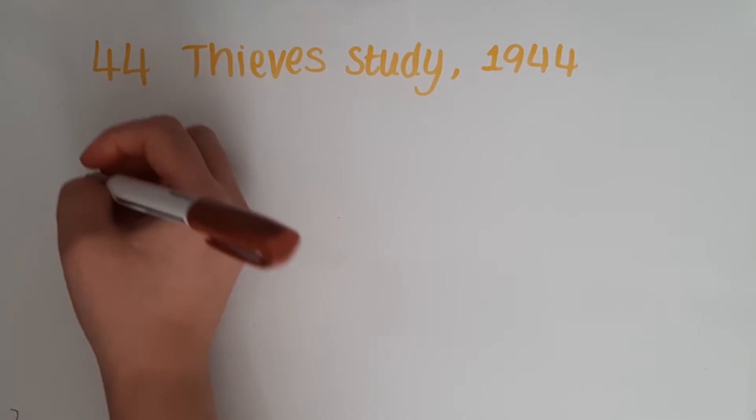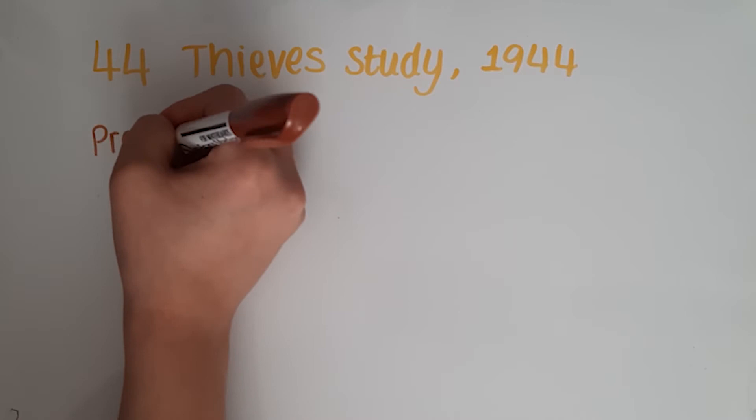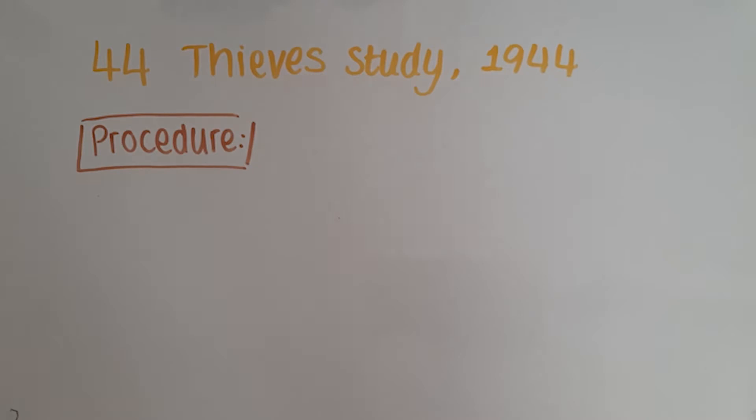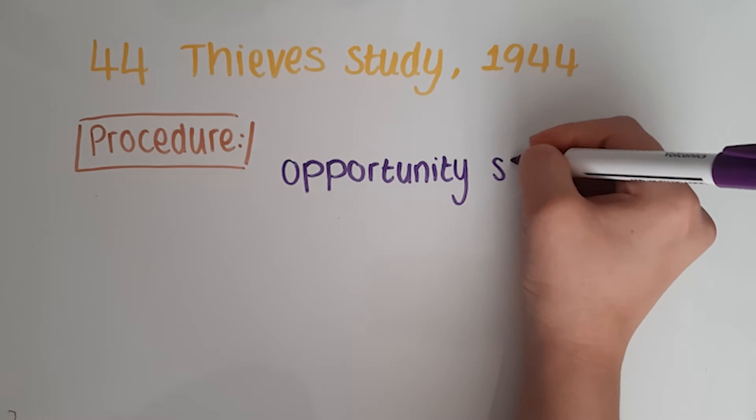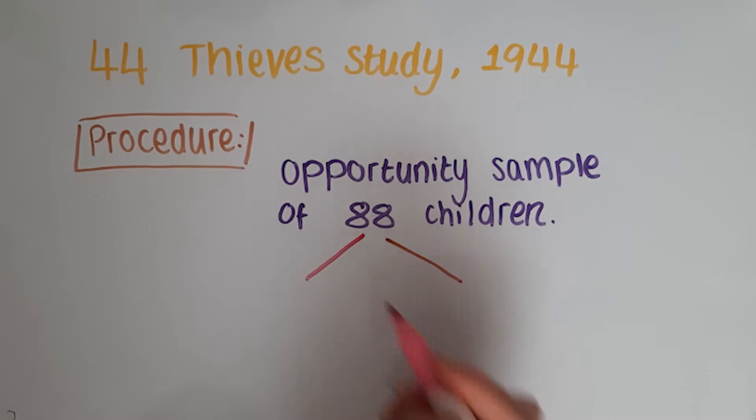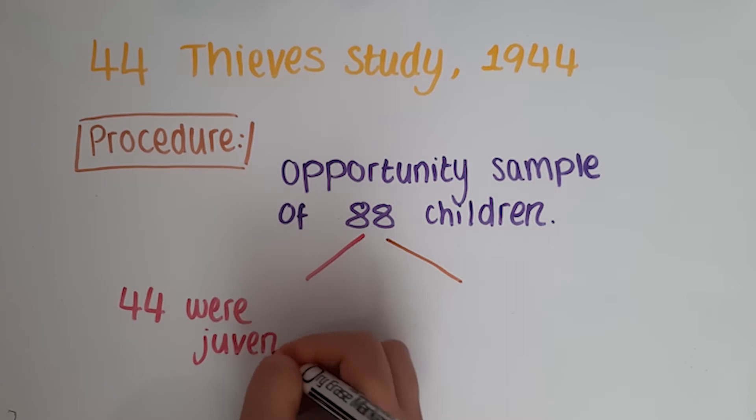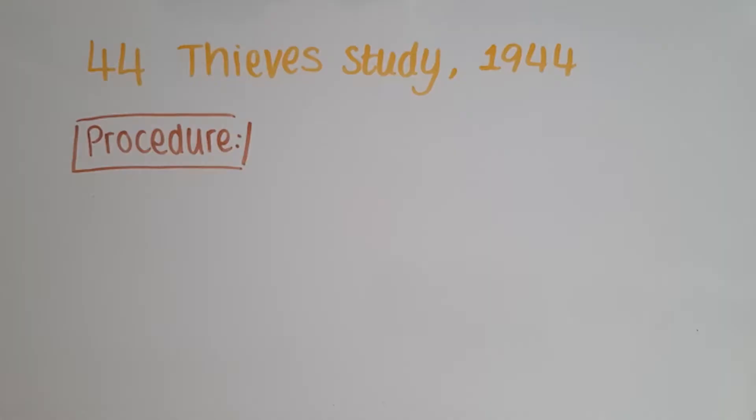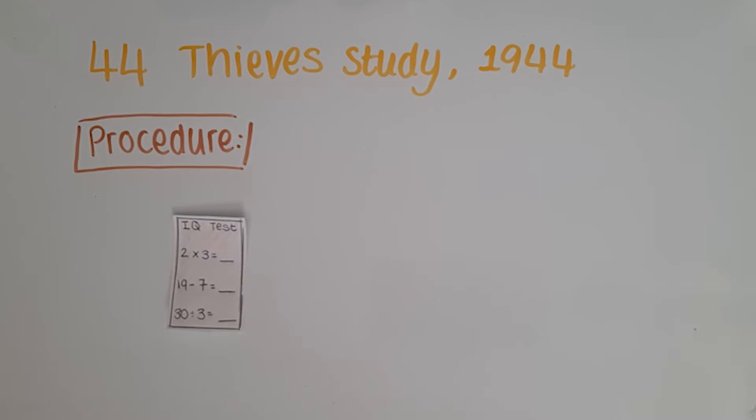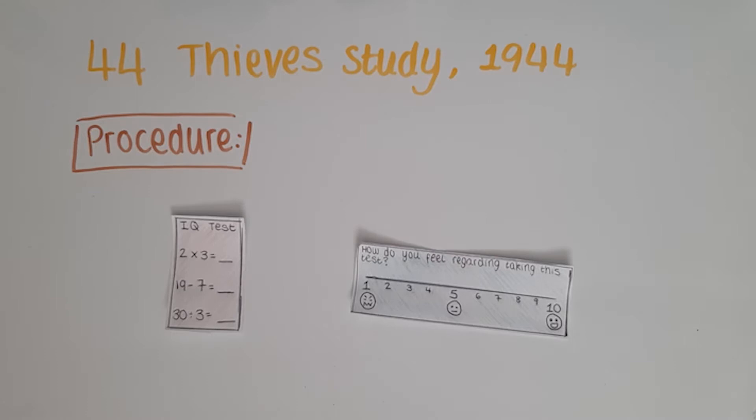To test these hypotheses, he studied 44 adolescent juvenile delinquents in a child guidance clinic. Between 1936 and 1939, an opportunity sample of 88 children was selected from the clinic where Bowlby worked. Of these 44 were juvenile thieves that had been referred to him because of stealing. Bowlby selected another group of 44 children to act as controls. These individuals were referred to the clinic because of emotional problems but had not yet committed any crimes. On arrival at the clinic, each child had their IQ tested by a psychologist who also assessed the child's emotional attitudes towards the test. At the same time, a social worker interviewed a parent to record details of the child's early life, for example, periods of separation.